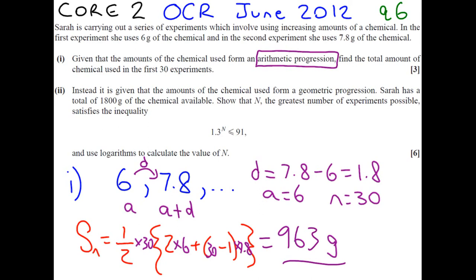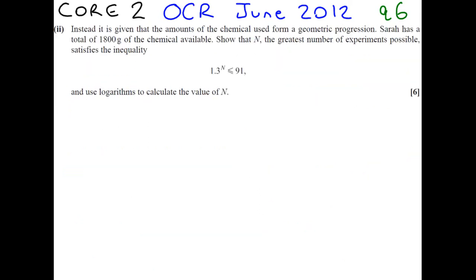The second part of the question is talking about how much chemicals we've used. If actually it wasn't an arithmetic progression, it was actually a geometric progression, which means that each time we are multiplying by a number. So let's have a look at that. 6, 7.8. Now because it's the first two terms, we can't be exactly sure unless we're told what type of series it is.